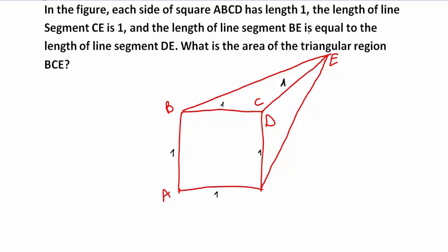The length of line segment BE is equal to the length of segment DE. So here we have A, B, C, D — and BE is equal to DE, meaning this side is equal to this side. The question asks: what is the area of the triangular region BCE?